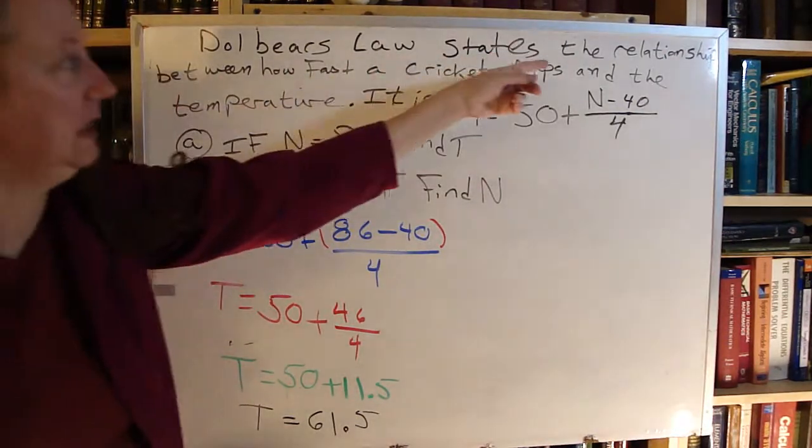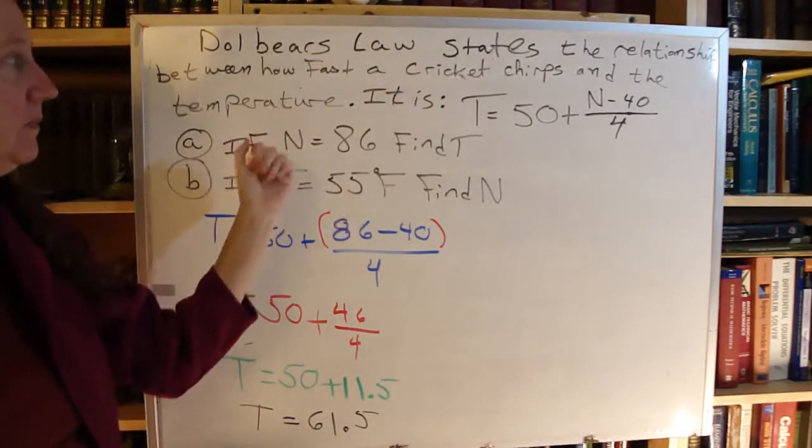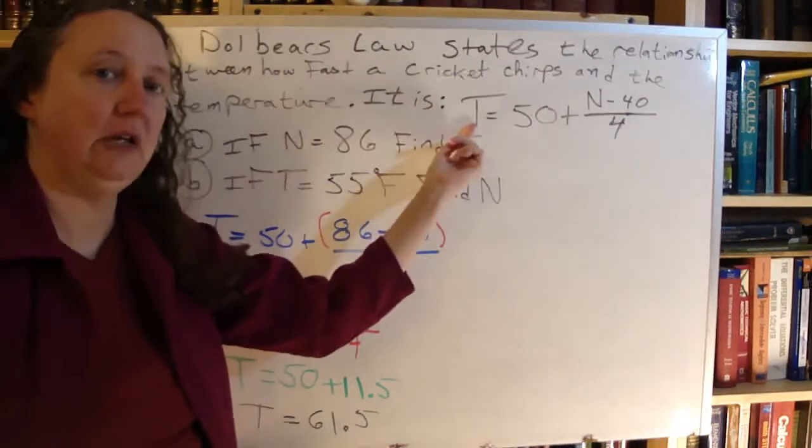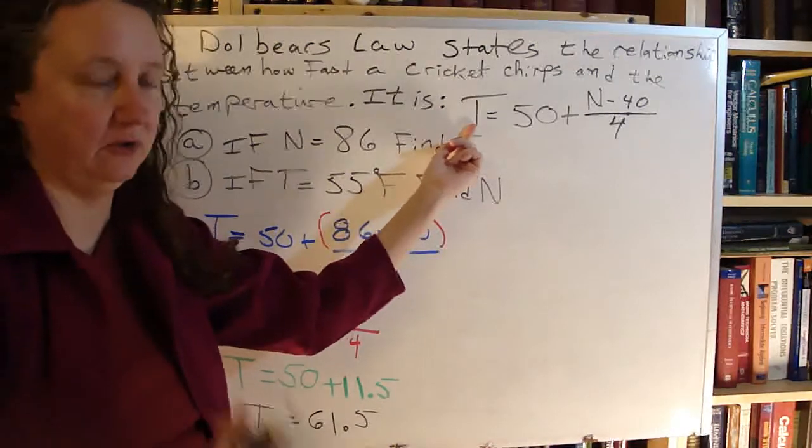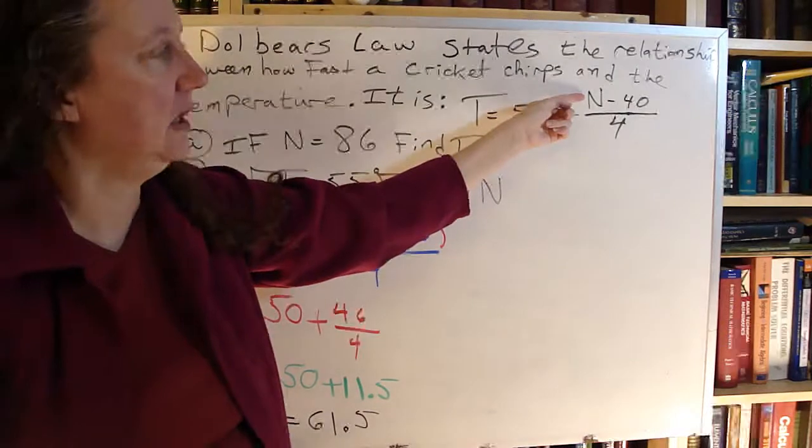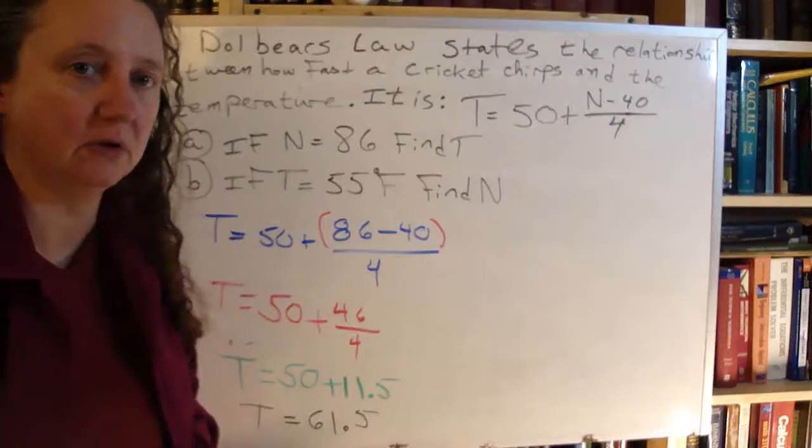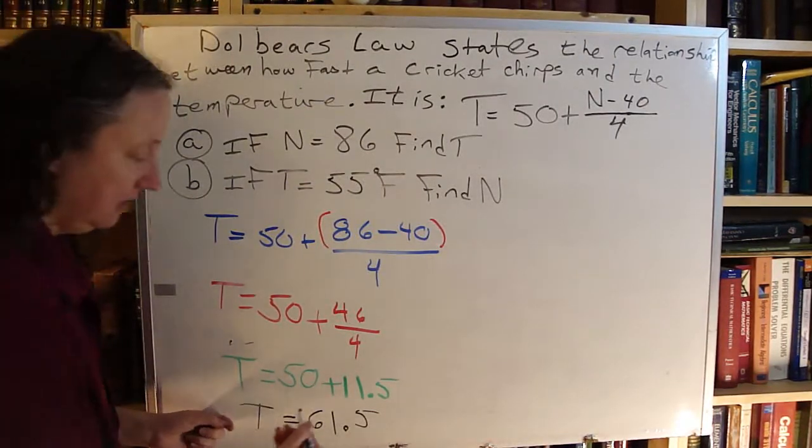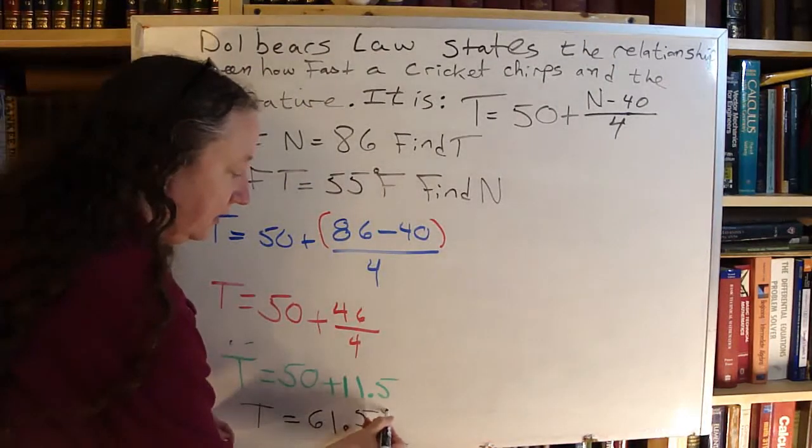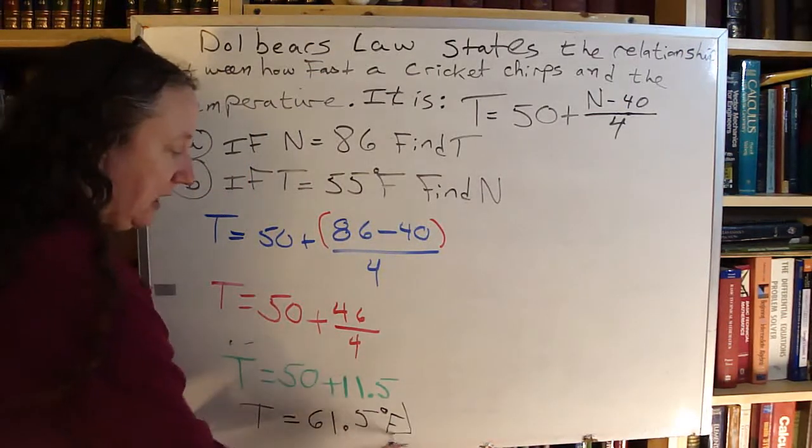So thinking about what we're talking about here, it's the relationship between how fast a cricket chirps and the temperature. So T often stands for temperature. Sometimes it's for time, but this time it's temperature. And N could be for the number of times the cricket chirps. So since we have T down here, I'm going to put my degrees Fahrenheit. Now I have my answer.